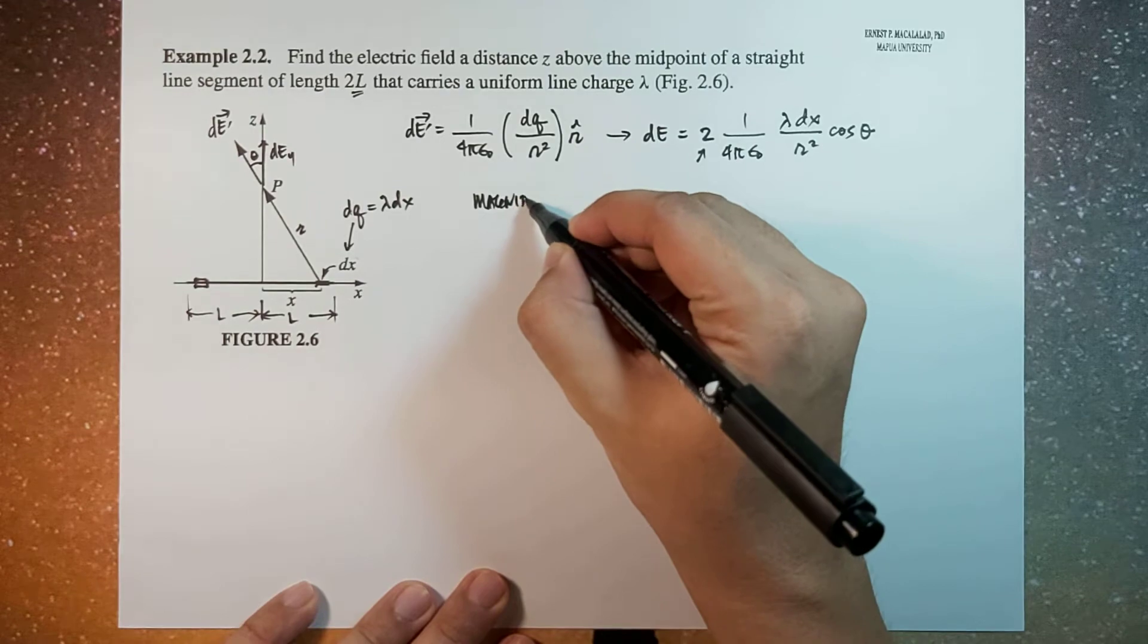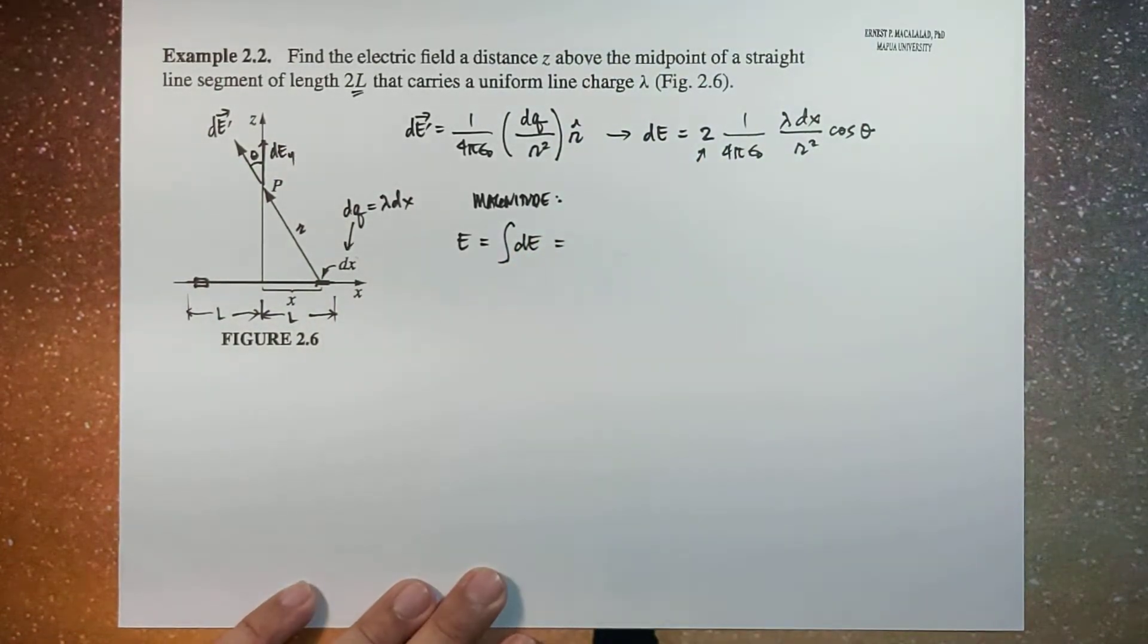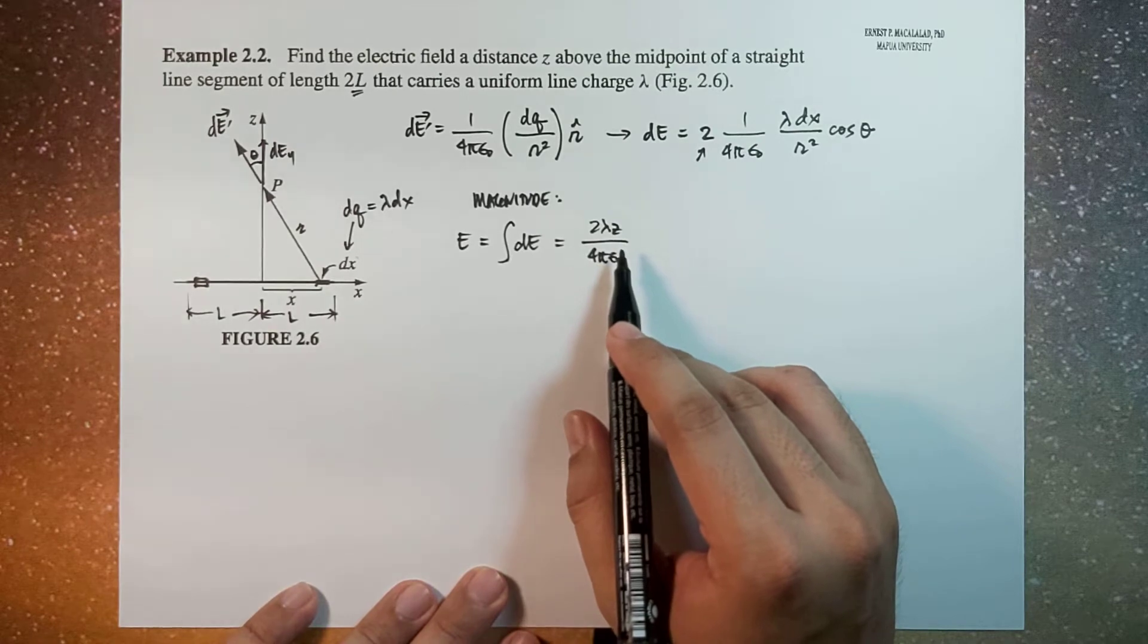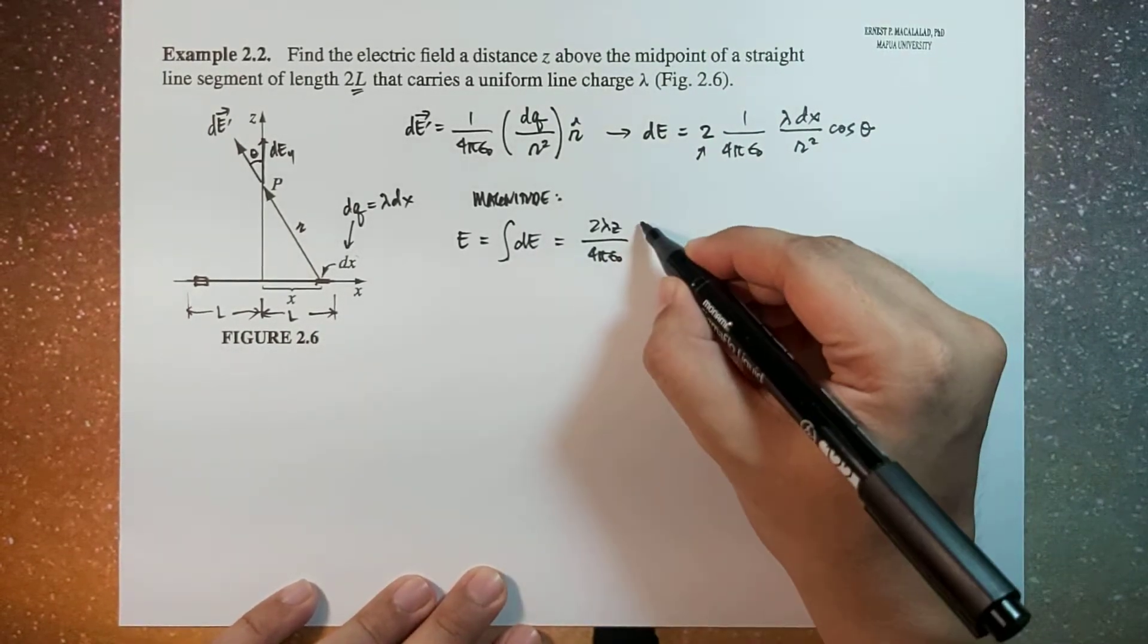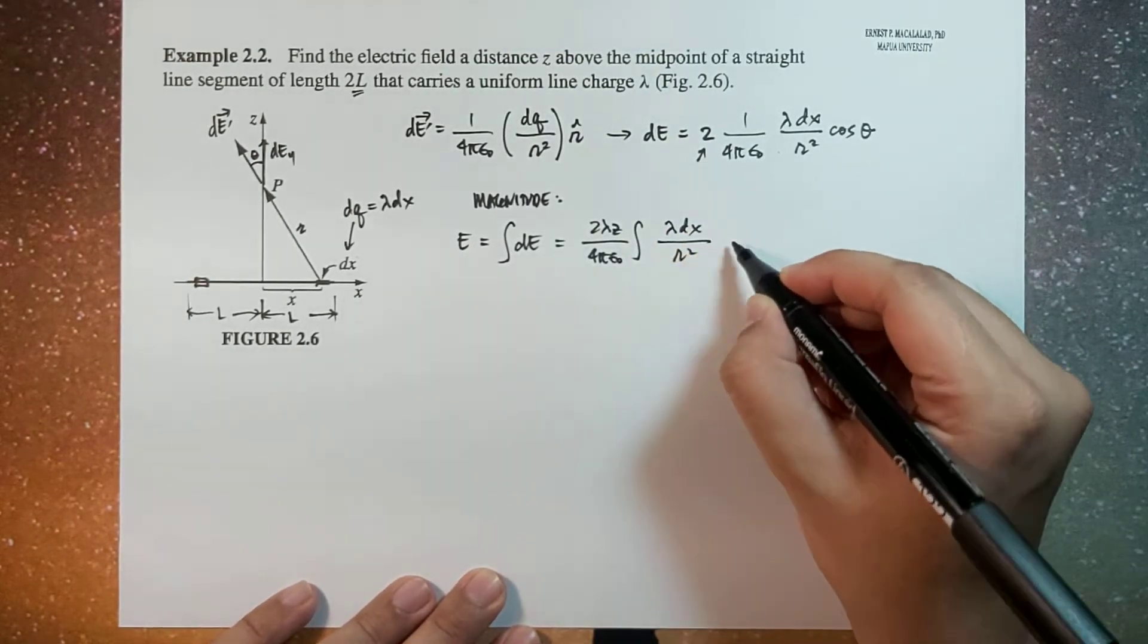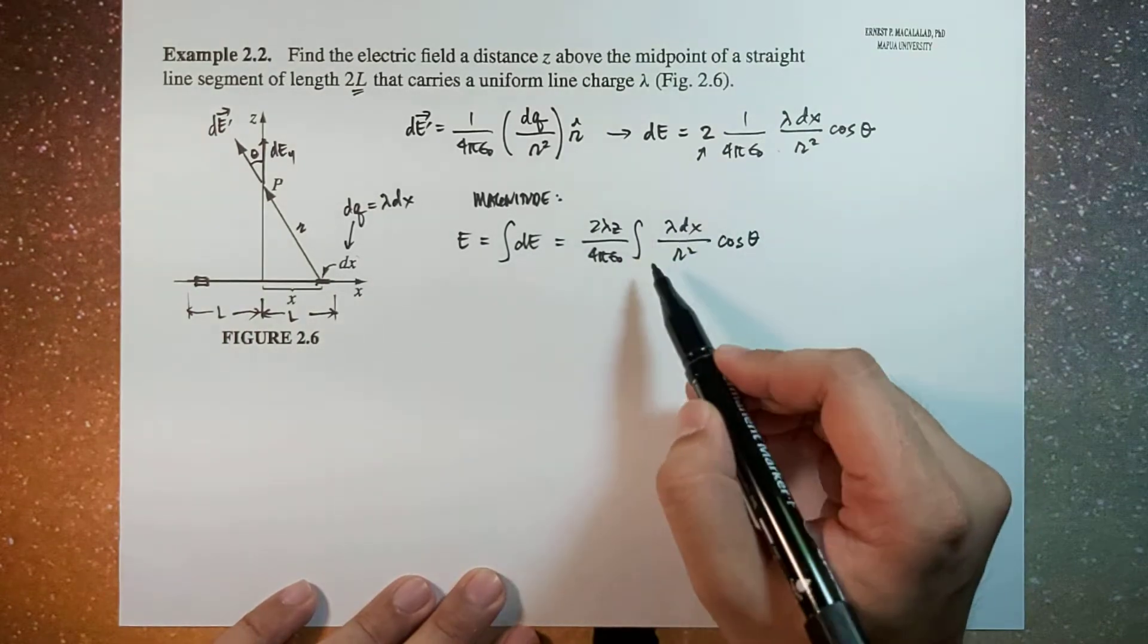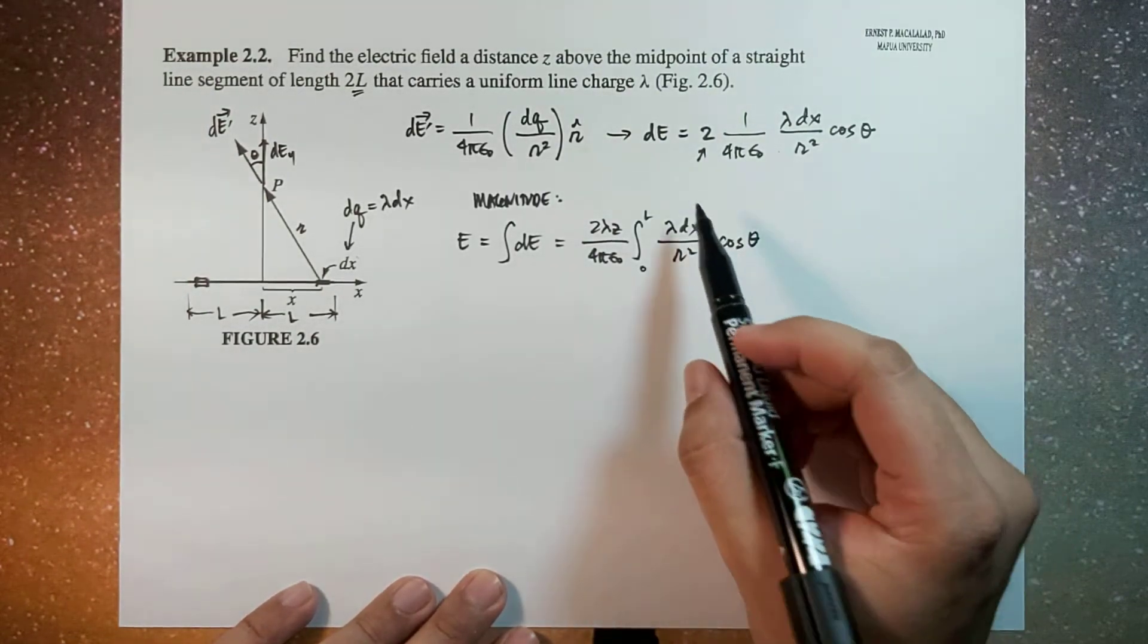So the magnitude of the electric field will now be just the integral of this dE. This is 2 lambda z over 4 pi epsilon naught, and again we take note here that we don't cancel the 2 and 4 here because we want to maintain this 1 over 4 pi epsilon coefficient. And then this will be integral of this one. We're going to integrate along the x direction, so the integration would be from 0 to L.